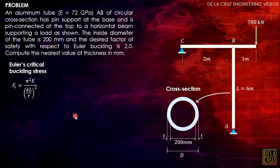There are three common k values. It can be 0.5, that is if it's fixed to fixed support. And we have 0.7, that is fixed at one point and pin at the other point. In this case, it's pin at both endpoints, so our k value here is 1.0.